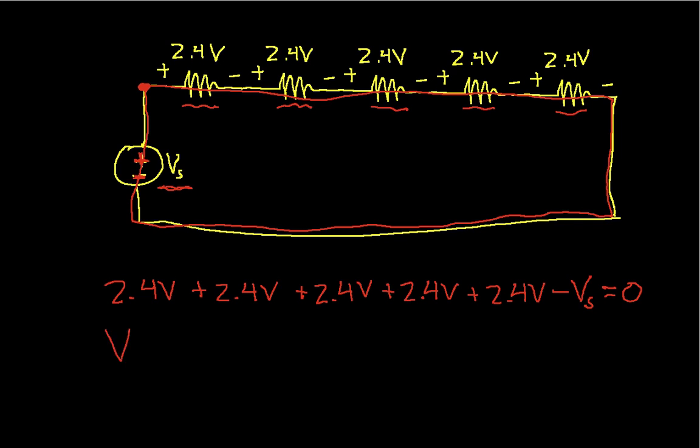So I can solve for Vs, and I get Vs is 2.4 plus 2.4 plus 2.4 plus 2.4 plus 2.4. And when I add these guys together, I get 12 volts. So what this tells me is that if I want to give these light bulbs the proper voltage, I would need to have a source voltage of 12 volts, which is not that realistic of an example, but it does illustrate Kirchhoff's voltage law beautifully. So that concludes this video.